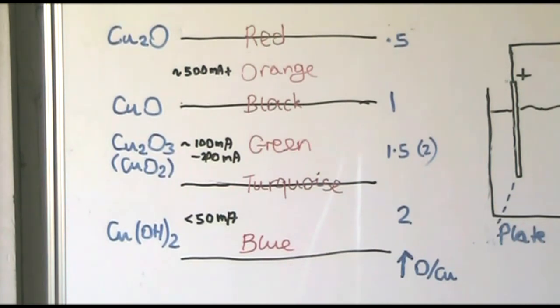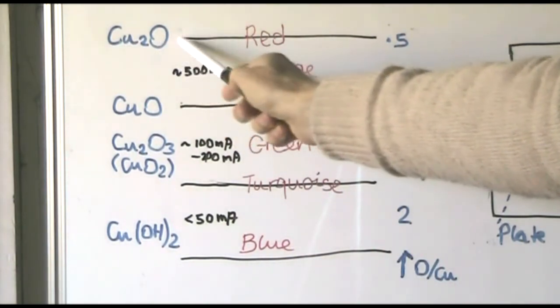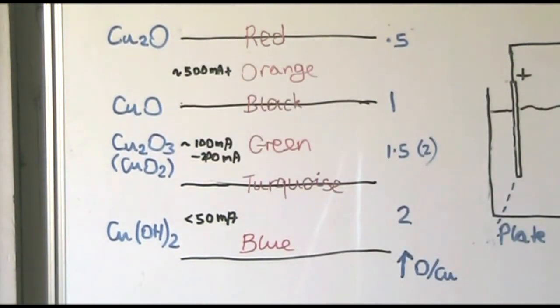Then we have the CuO which is the black version we saw, and then we have the orange which is a combination of the black one and the pure red Cu2O.